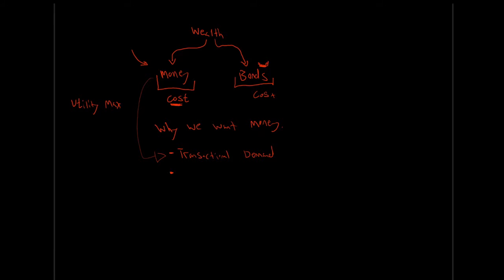The second reason is our precautionary demand. This is excess cash we want to carry around above and beyond our transactional demand just in case — maybe our car breaks down and we need a bunch of extra money, or maybe there's a really good sale and we need to buy extra stuff beyond our typical transactional demand. This is just extra precautionary funds to satisfy those one-off events that may occur.